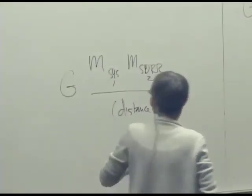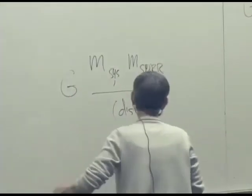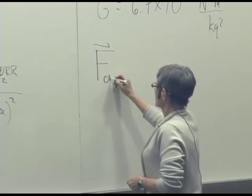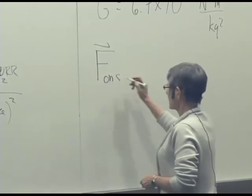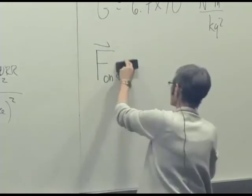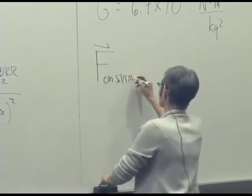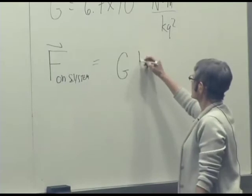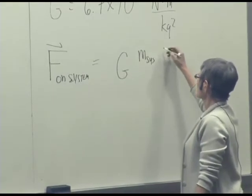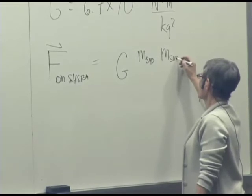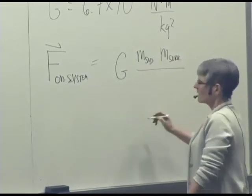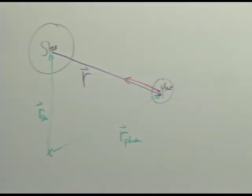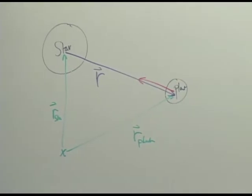And so now we can make this a little bit more precise. So we can write the gravitational force as F on the system by the surroundings. So we have this gravitational constant, we have the mass of the system, we have the mass of the object in the surroundings. And for the distance, that's just going to be the magnitude of this relative position vector, isn't it? So we can actually write the magnitude of R squared.